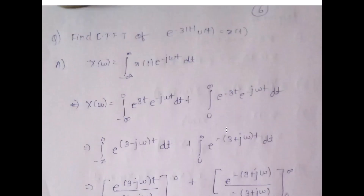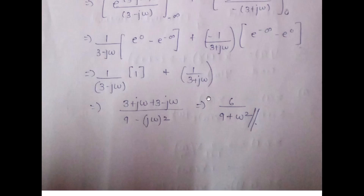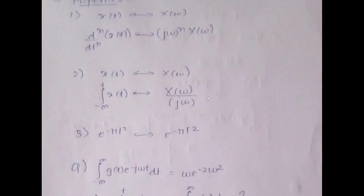Applying the limits gives the final answer as 6 divided by (9 + ω²). So for x(t) = e^(−3|t|)u(t), we split the expression from minus infinity to 0 and 0 to infinity, giving e^(3t) and e^(−3t) respectively. Applying the integration formula and limits yields the final answer: X(ω) = 6 / (9 + ω²).